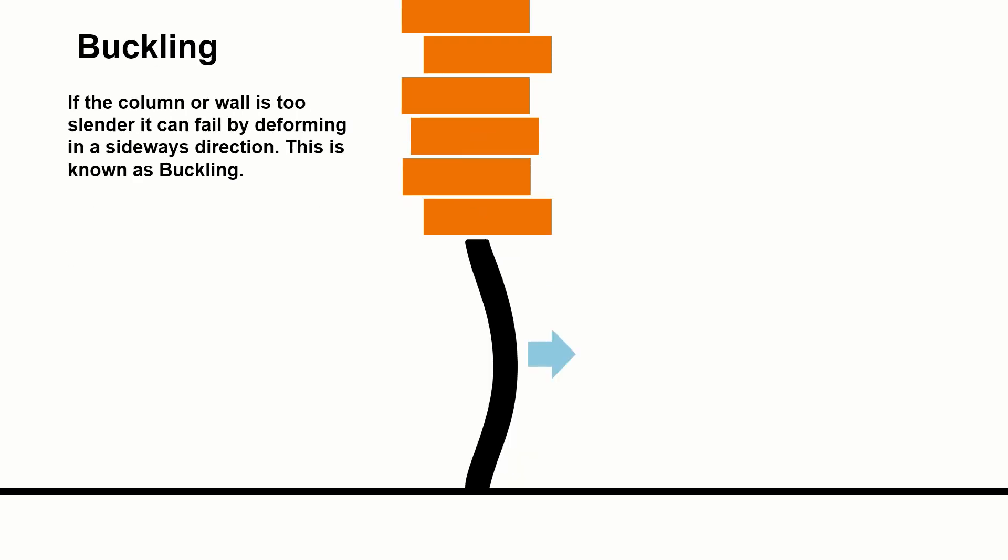Likewise, if we don't design the column or the wall in a correct way, we can cause deformation. If the wall or column is too slender, it would probably deform under the weight or under the load in such a way that would cause it to bend outwards and buckle and eventually snap and fail.